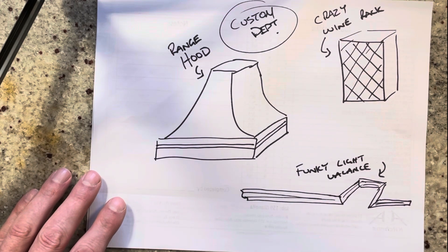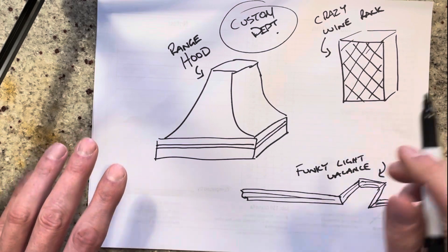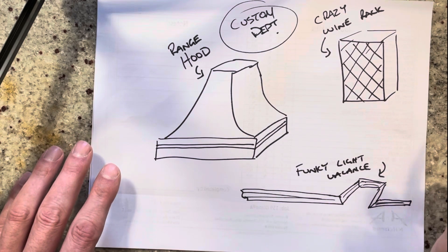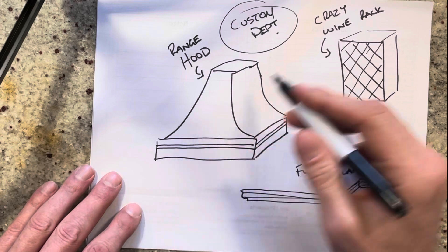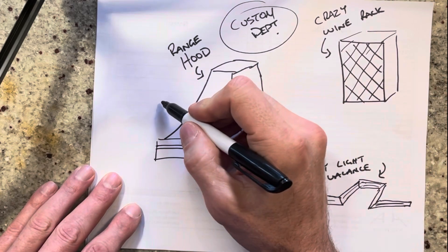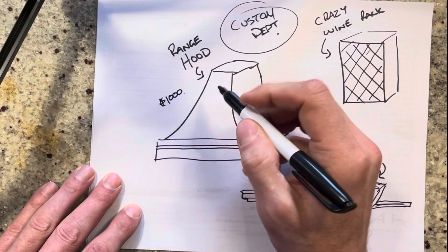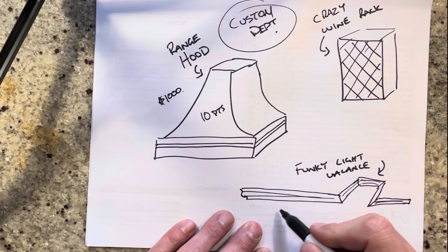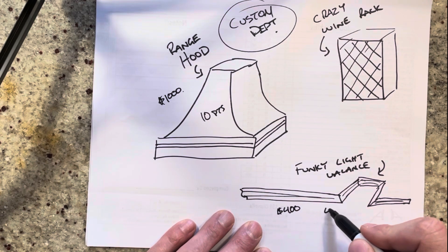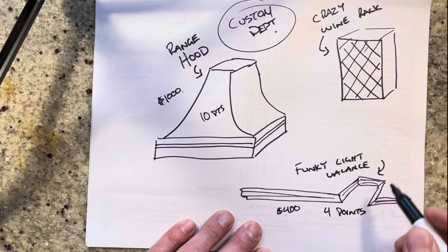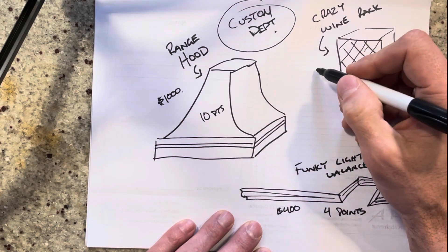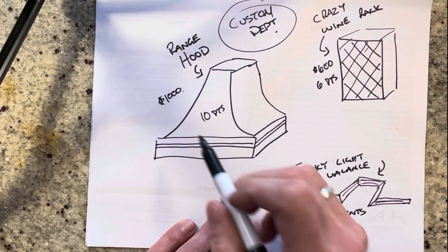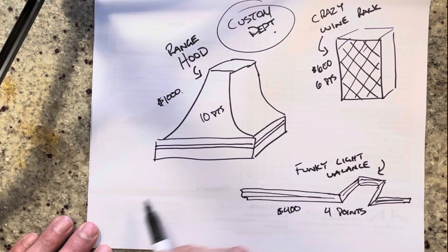The trick is to look at each item and assign points. This doesn't have to be overly technical — as long as all the points are accounted for when the job is done, we're okay. So the hood is about a thousand dollars, giving it 10 points. The light valance is maybe 400 dollars, so 4 points. The wine rack is maybe 600 dollars, so 6 points.